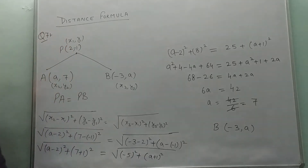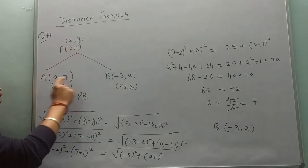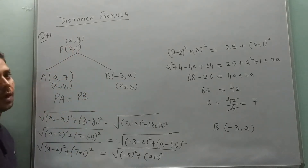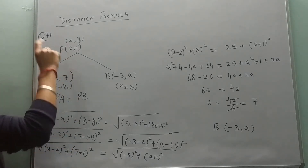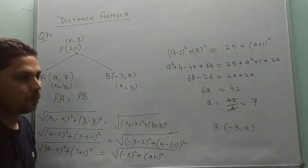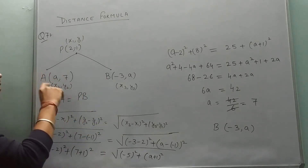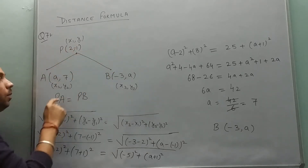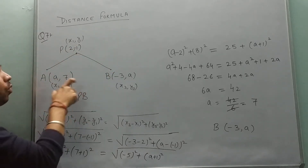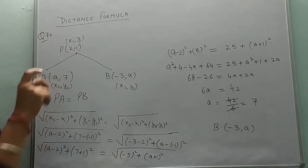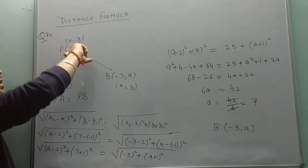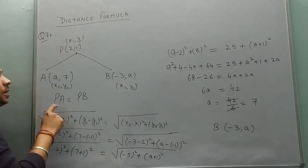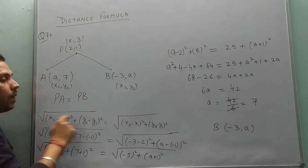Question number 7: point P is equidistant from points A and B, and we have to find the value of 'a'. Since P is equidistant from A and B, we have the condition that PA is equal to PB. So we apply the distance formula twice — first on PA, then on PB.